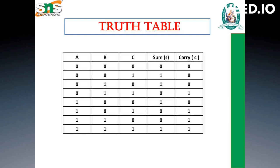The full adder again produces only a sum bit and a carry bit as output. Here is the truth table with inputs A, B, C and outputs sum and carry: 0+0+0 gives sum 0, carry 0; 0+0+1 gives sum 1, carry 0; 0+1+0 gives sum 1, carry 0; 0+1+1 gives sum 0, carry 1; 1+0+0 gives sum 1, carry 0; 1+0+1 gives sum 0, carry 1; 1+1+0 gives sum 0, carry 1; and 1+1+1 gives sum 1 and carry 1.